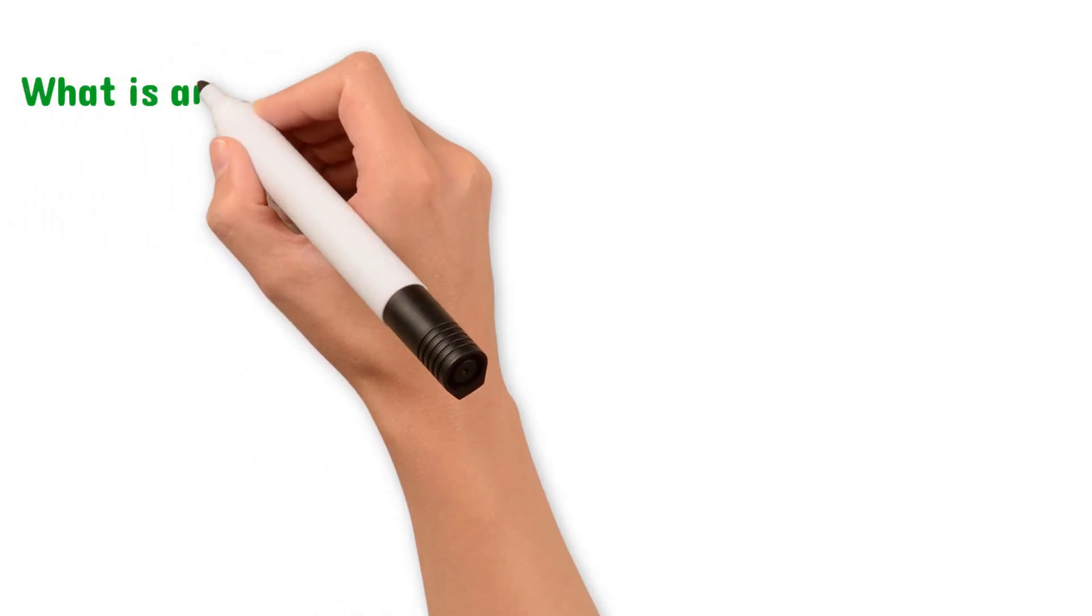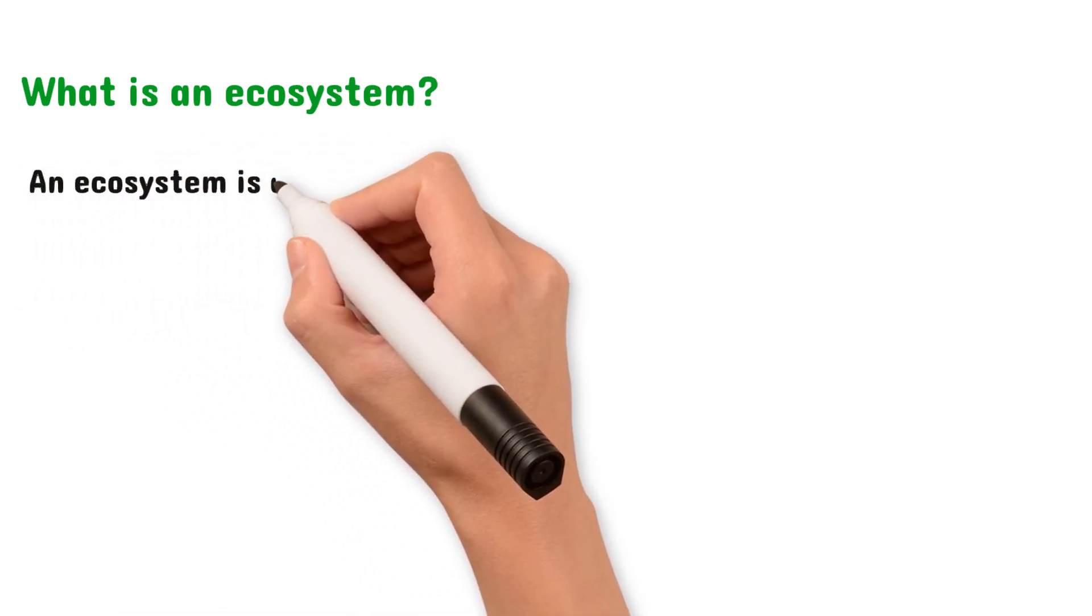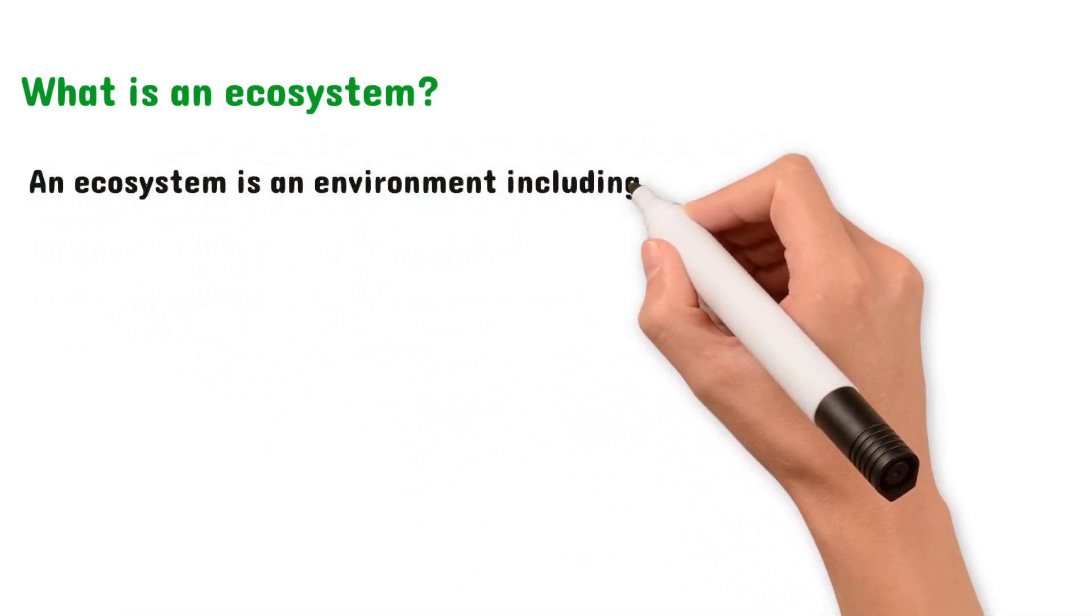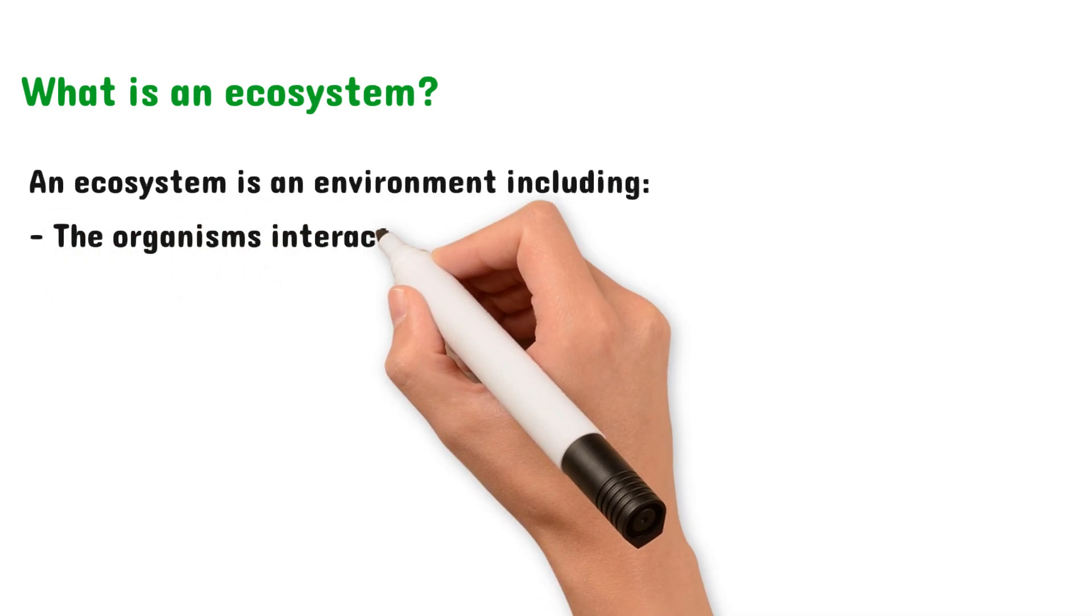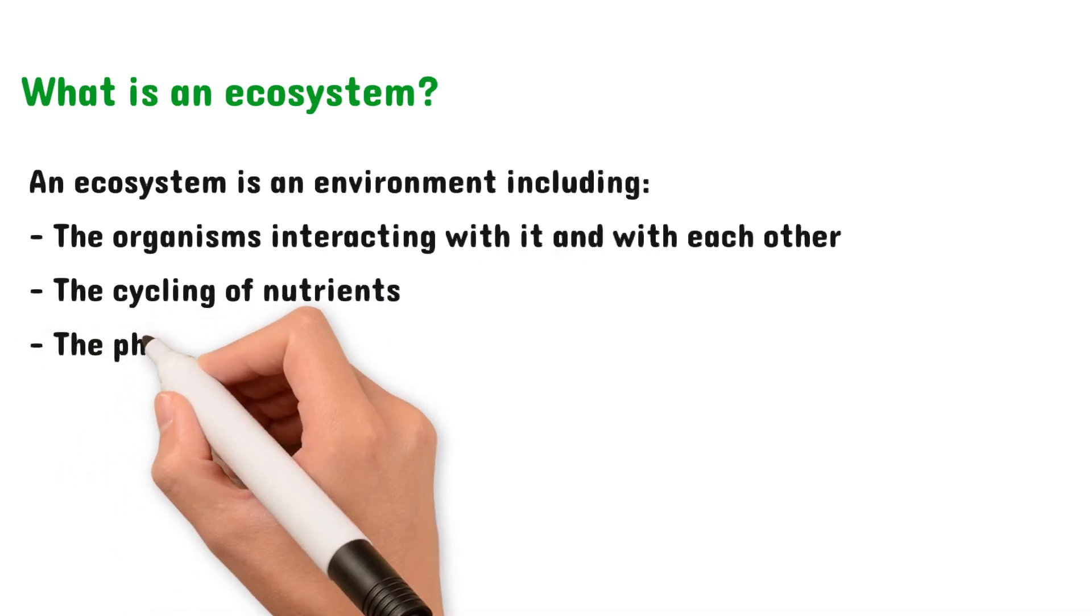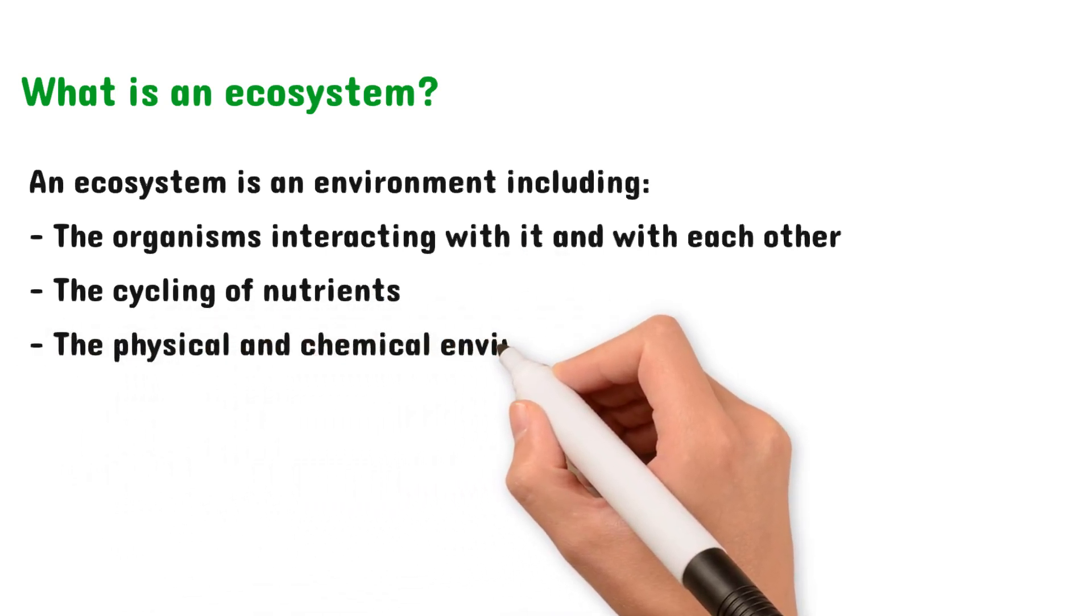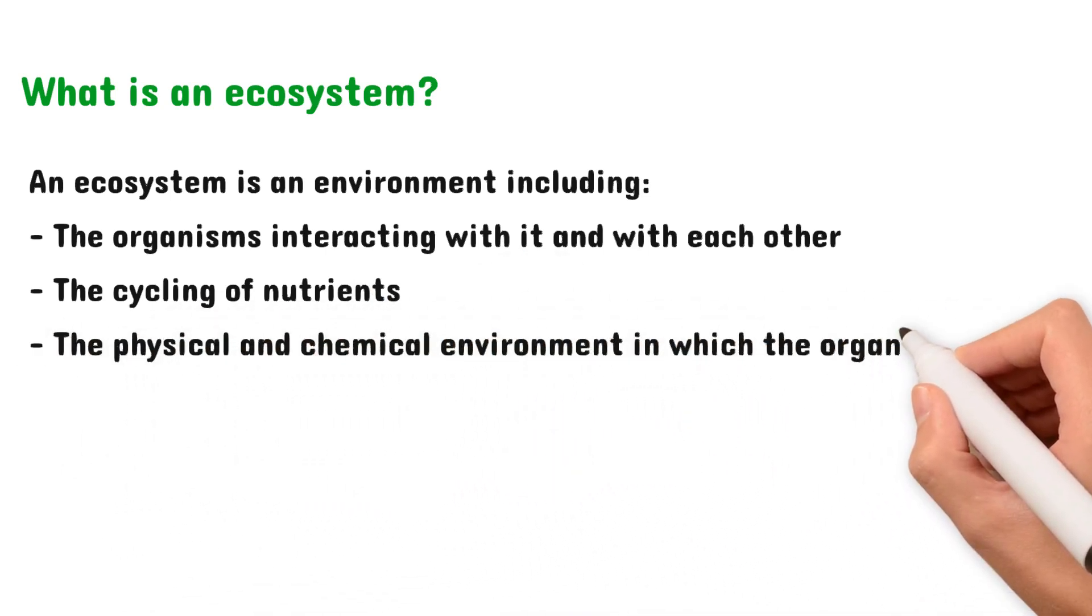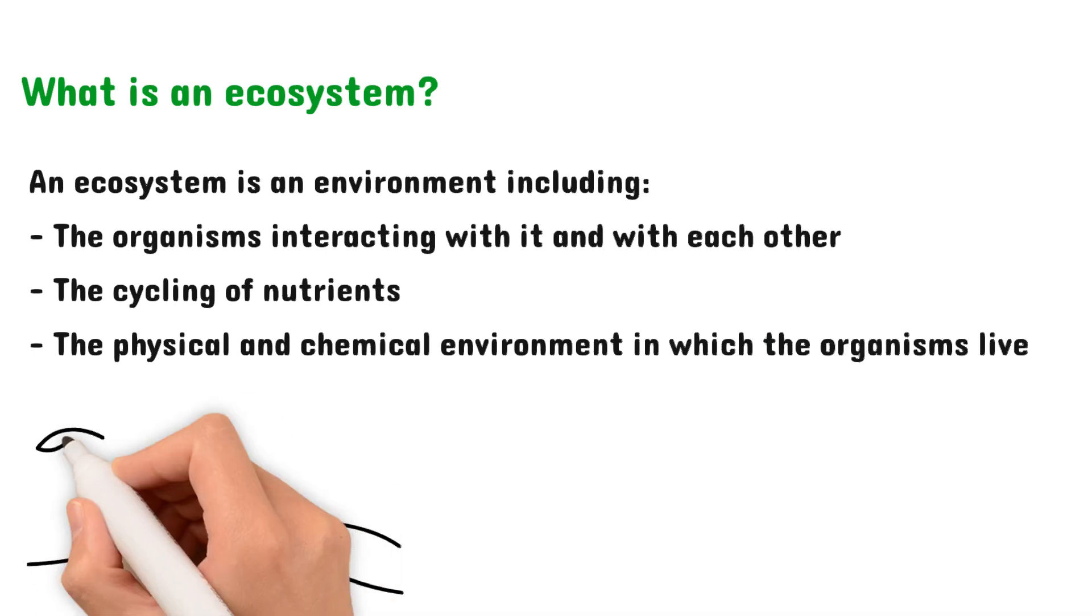Let's begin by answering the simple question: what is an ecosystem? This is the exact definition you have to know for your exams. An ecosystem is an environment including the organisms interacting with it and with each other, the cycling of nutrients, and the physical and chemical environment in which these organisms live. So let's take the desert for example.